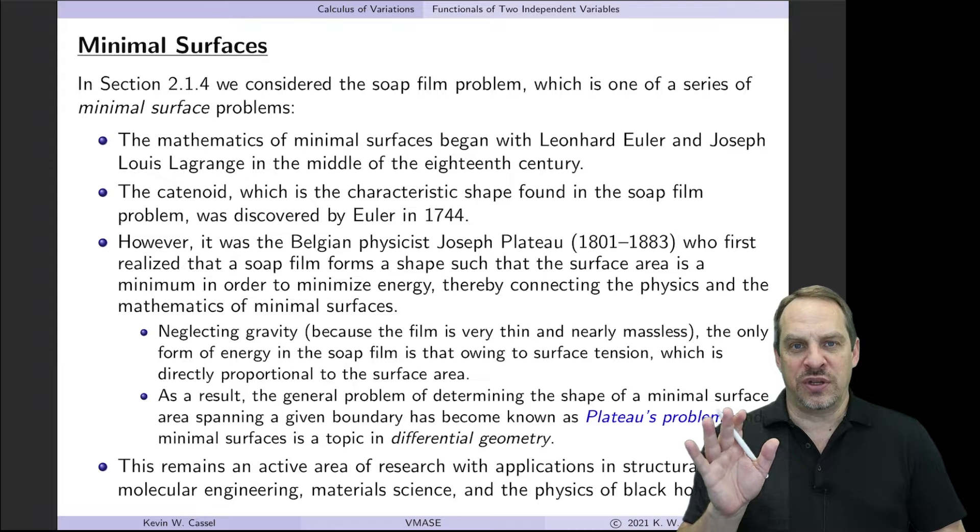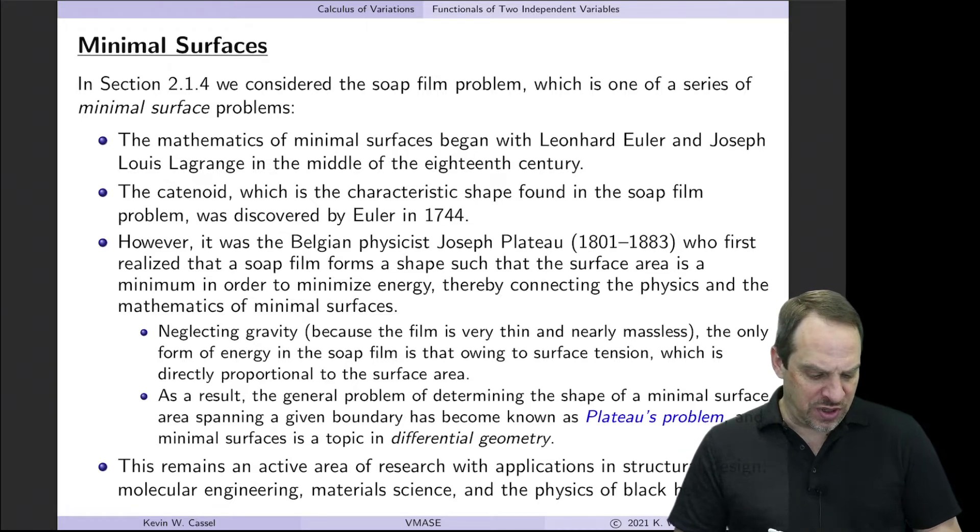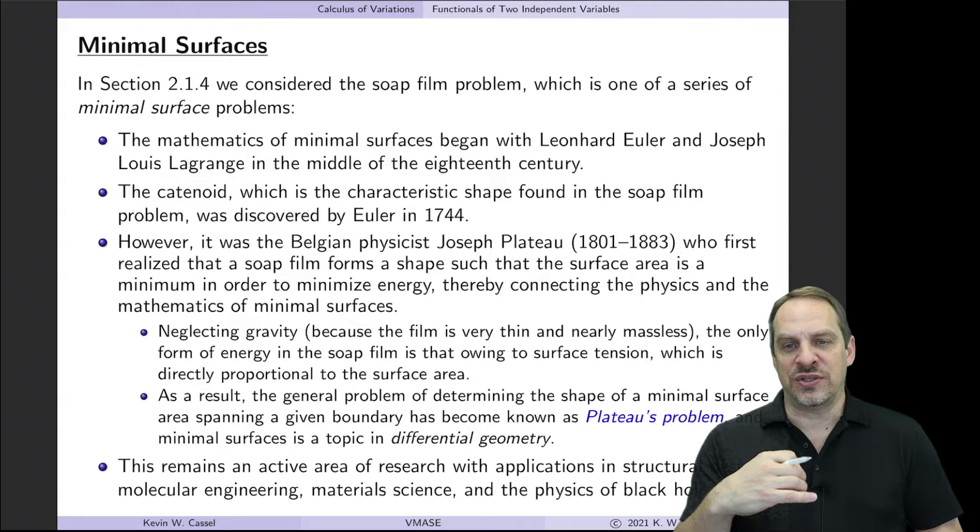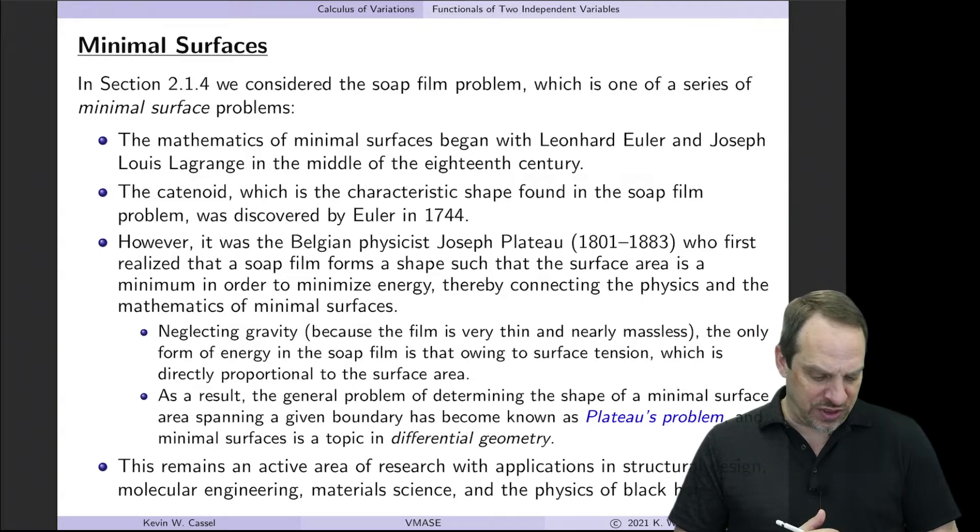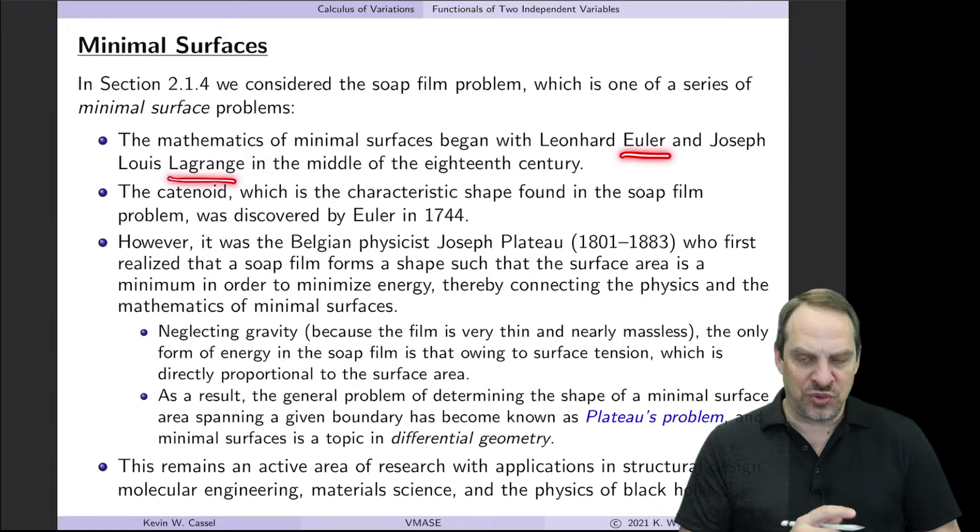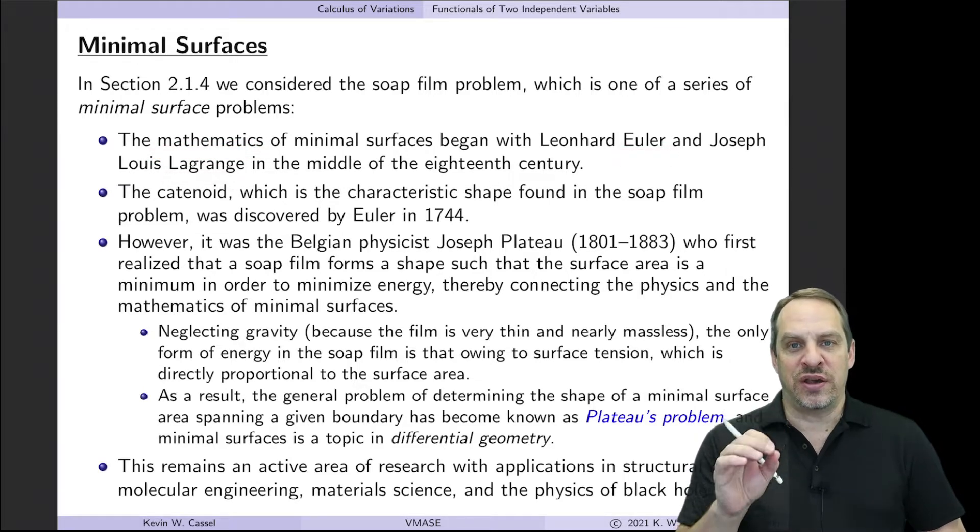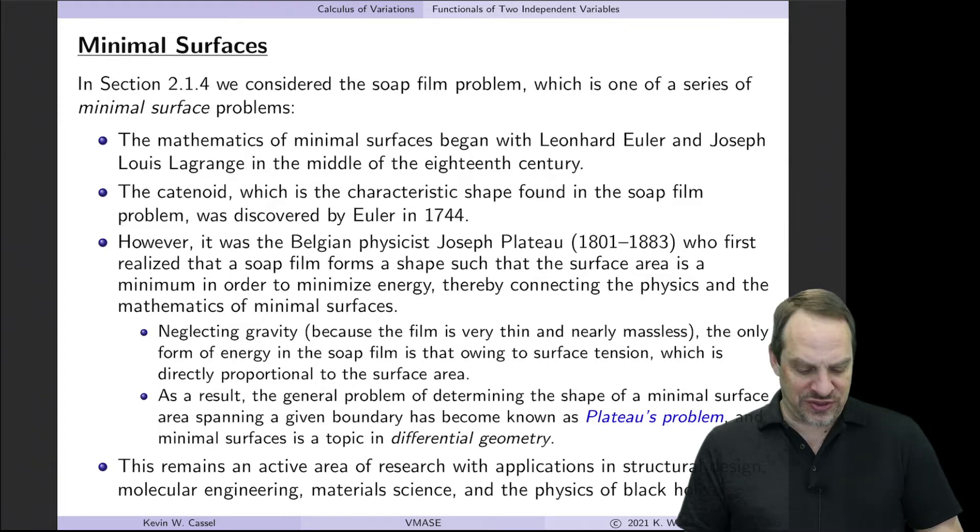We'll look at a particular case of this in a later video, but I just want to give you the background and look at this as an example of another case that results in PDEs. So, the mathematics of minimal surfaces goes all the way back to Euler and Lagrange who formalized the calculus of variations back in the middle part of the 1700s. And it was Euler during that time who actually solved the soap film problem, which we'll address later in the chapter. And the result is a catenoid.